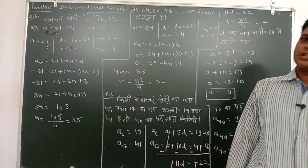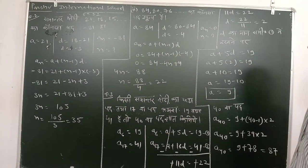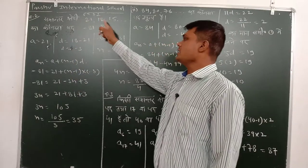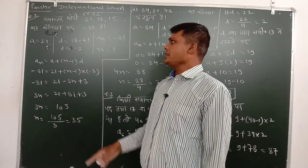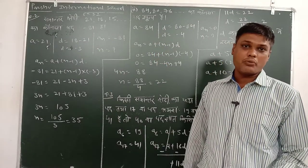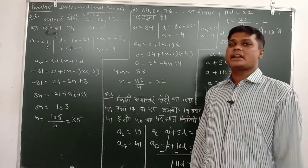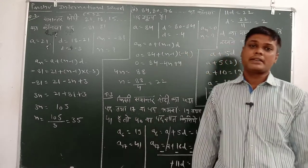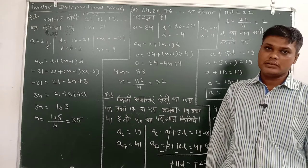Aaj hum karne ja rahe hain question number 2. Uspe kya diya hua hai? Aapko dekho, samajh se aapko de rakhe: 21, 18, 15. Iska kaun sa pad minus 81 hai? Matlab samajh rahe hain? Matlab humko padok ke sankhya gyat karni hai. Kaun sa number ye pad par minus 81 hoga?